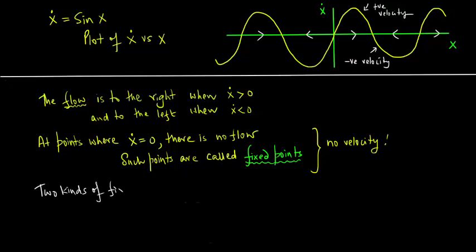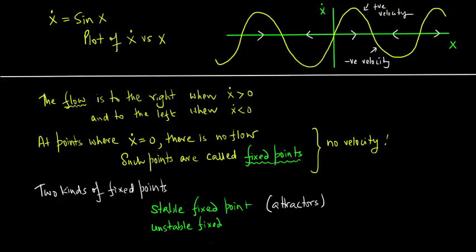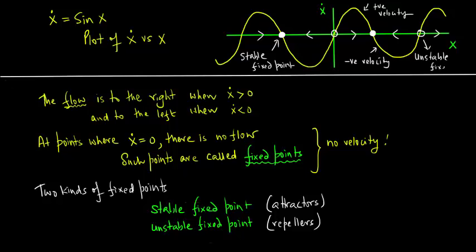There are two kinds of fixed points: stable fixed points, also referred to as attractors, and unstable fixed points, referred to as repellers. In the diagram, the closed circles are the stable fixed points and the open circles are the unstable fixed points. On the stable fixed points the flow is attracted towards them, and on the unstable fixed points the flow is repelled from them.